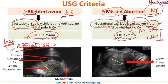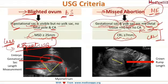You can see here in these radiological images — this is a gestational sac, and we measure the mean sac diameter by measuring the length of the gestational sac from here to here. Once the fetal tissue appears, as you can see here, it is measured in terms of crown rump length.